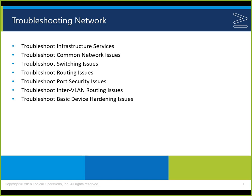Let's look at troubleshooting. A lot of the stuff we've talked about as we went through the class — troubleshooting, what could cause this, what could cause that, what's proper, what's not proper. For instance, with DHCP, if we don't have a relay agent, the router is going to stop the broadcast. We know that DHCP has half of its packets as broadcast. Troubleshooting the network covers infrastructure services, common network issues, switching, routing, port security, inter-VLAN routing, and basic device hardening.